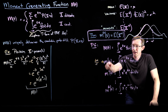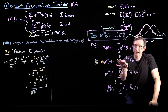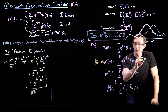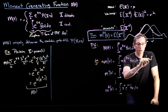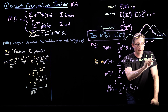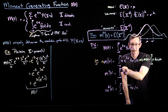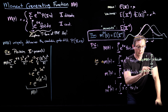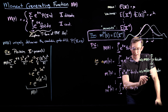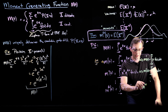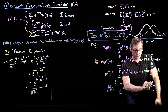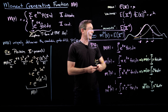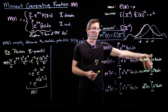And now, if I evaluate these at zero, e to the zero is one. So this implies that m prime at zero is just the integral from negative infinity to infinity of x, f of x dx. This also implies m double prime at zero equals the integral from negative infinity to infinity of x squared, f of x dx. And the nth derivative evaluated at zero is the integral from negative infinity to infinity of x to the power n, f of x dx.